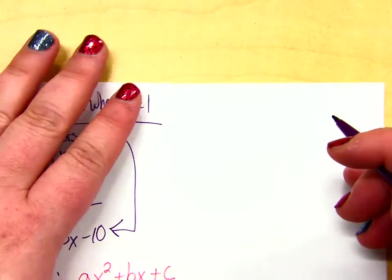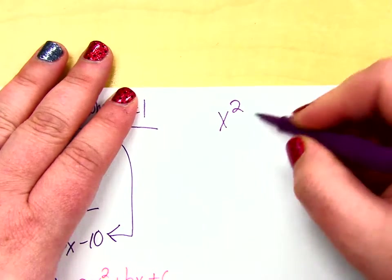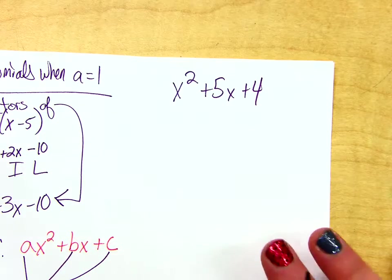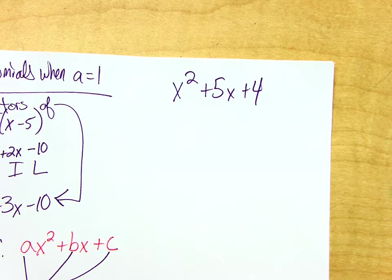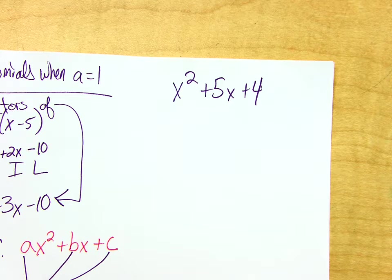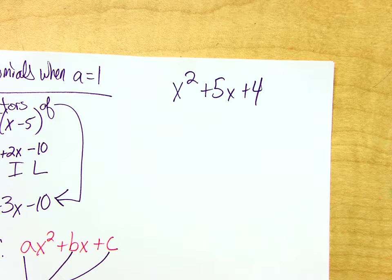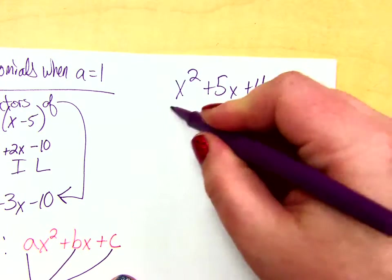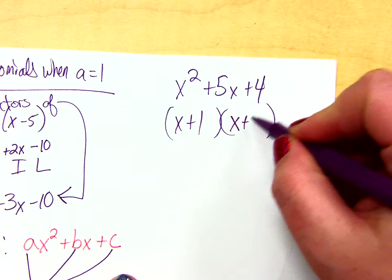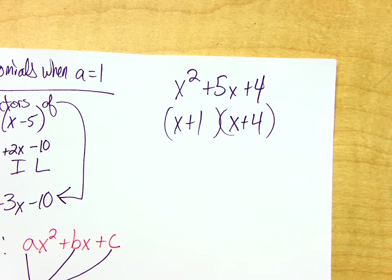Let's try another positive one. X squared plus 5x plus 4. Try that. Once you get it, it's pretty easy. Sarah, go ahead. X plus 1 times x plus 4. Yeah. 1 and 4. 1 times 4 is 4, and 1 plus 4 gets me to 5.